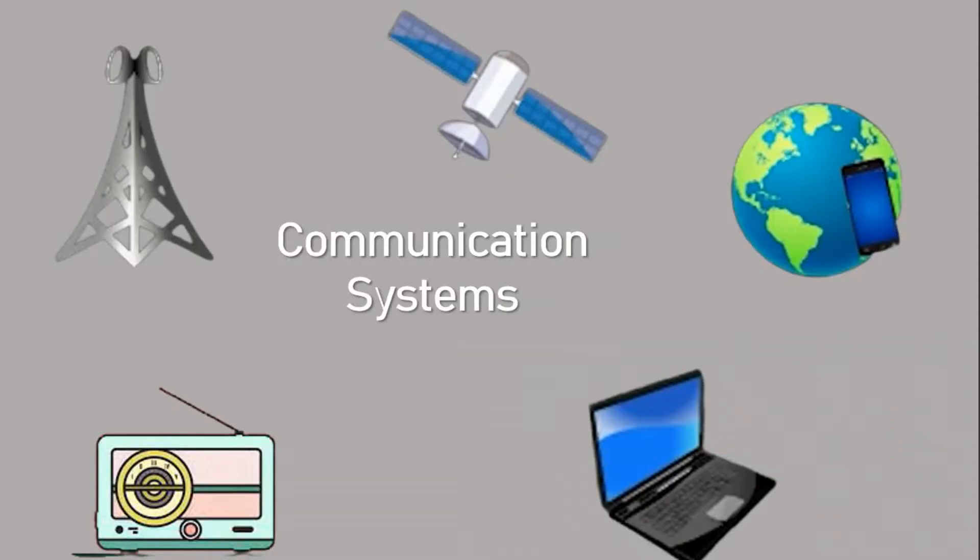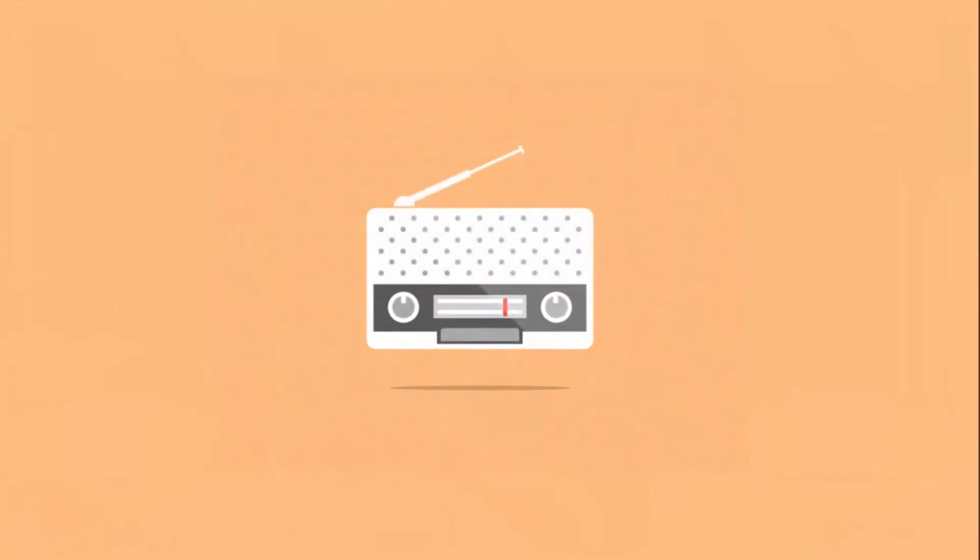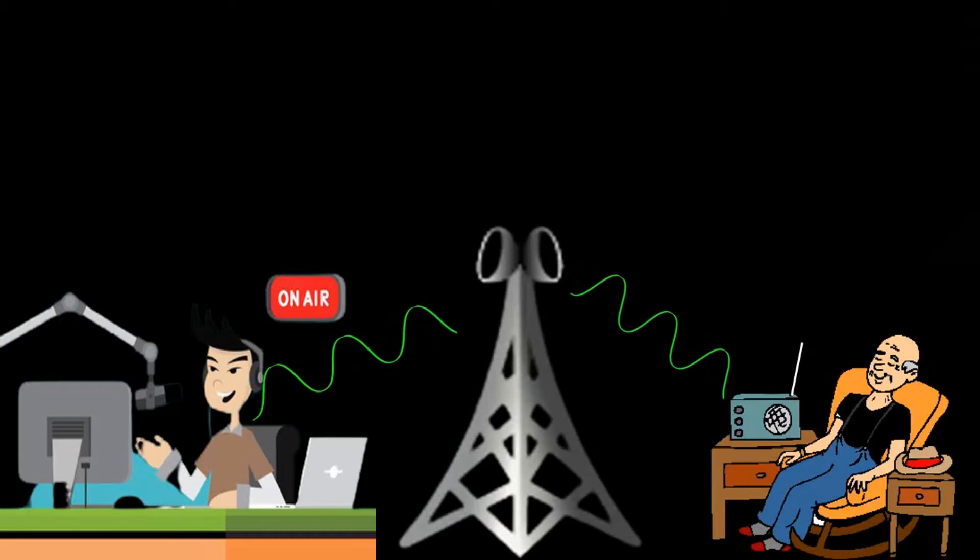One of the popular communication systems where the process of modulation is applied is radio communication. In radio communication, people get the signal from the base station through antenna. There we can see the voice of the radio jockey is transmitting through antenna.